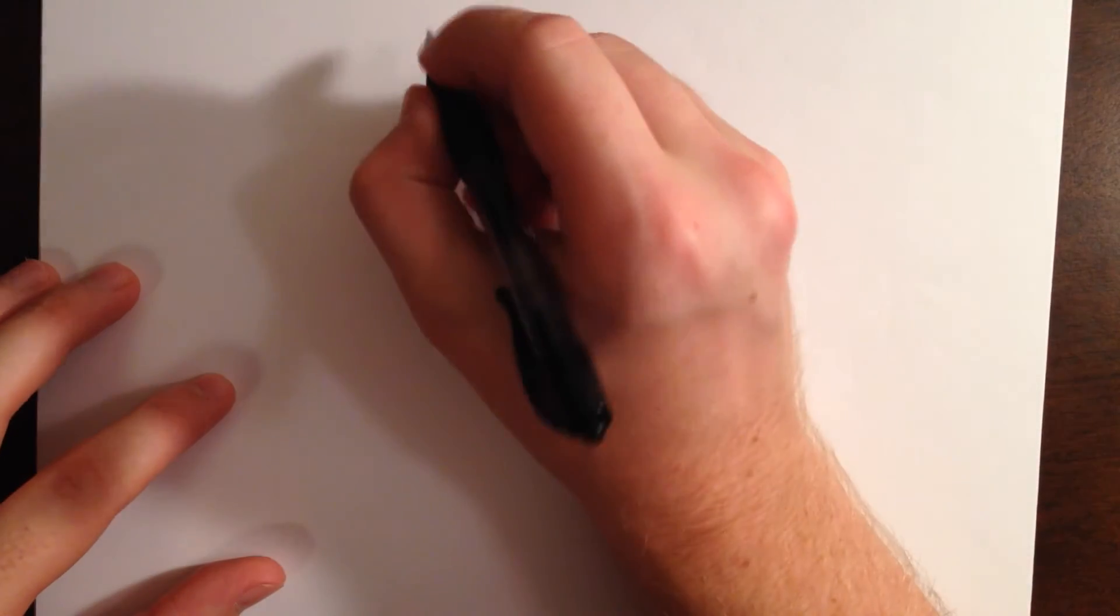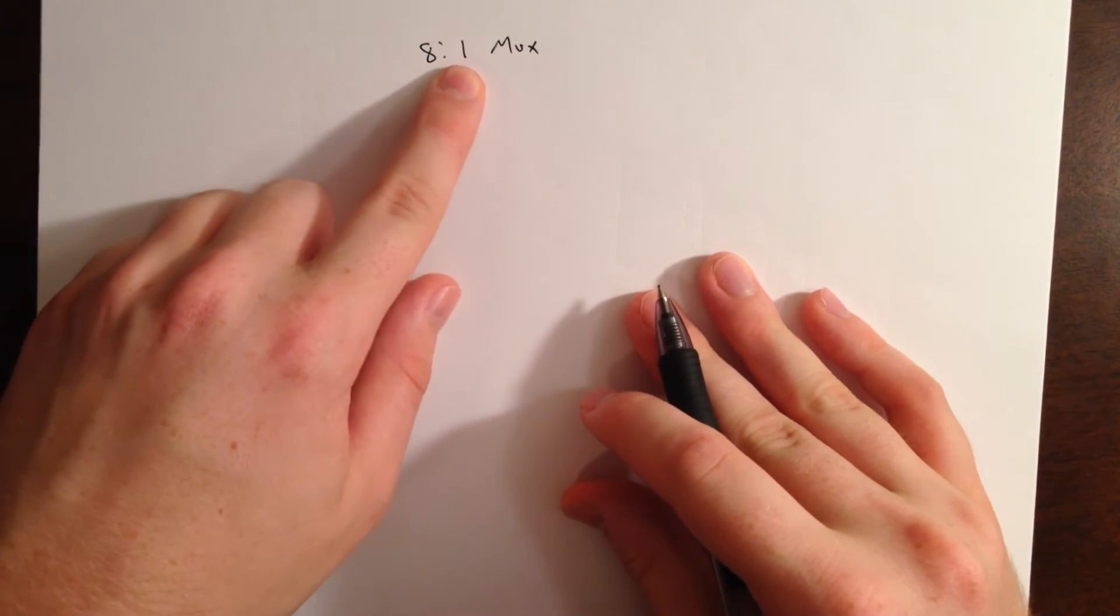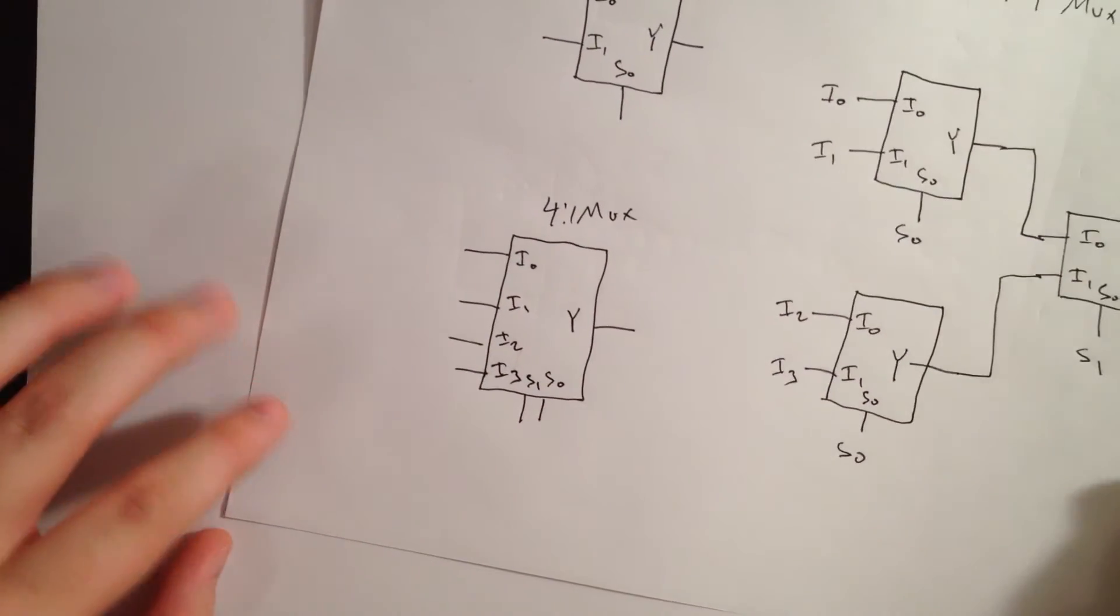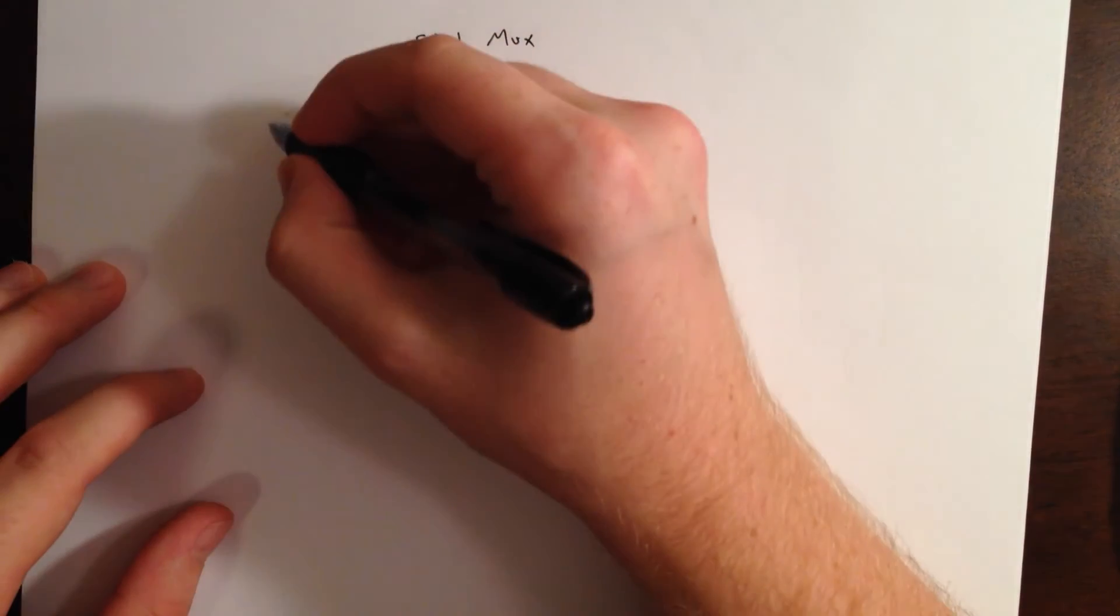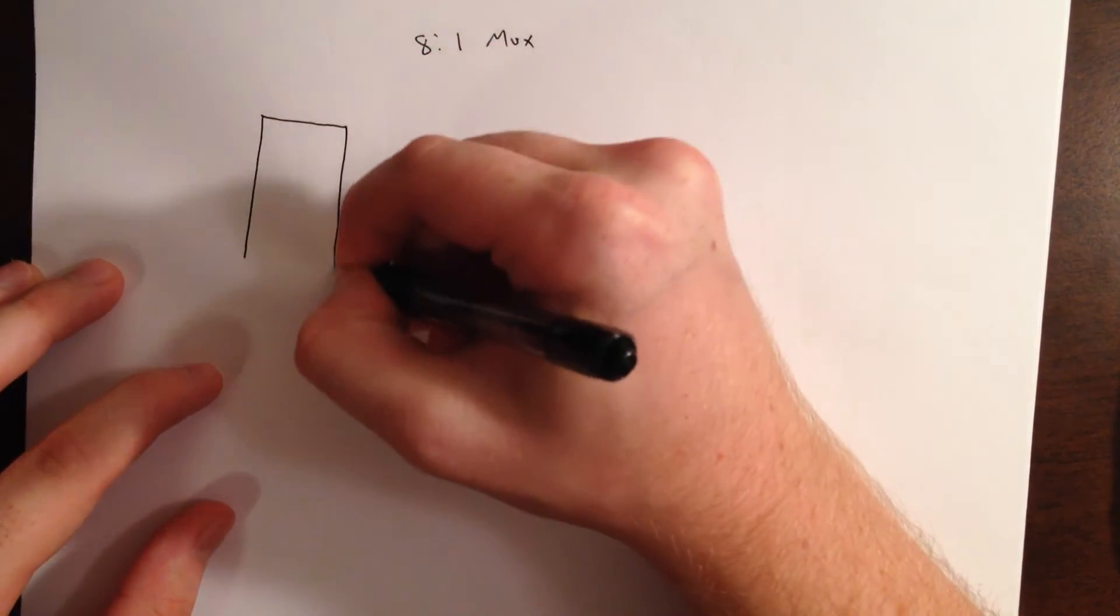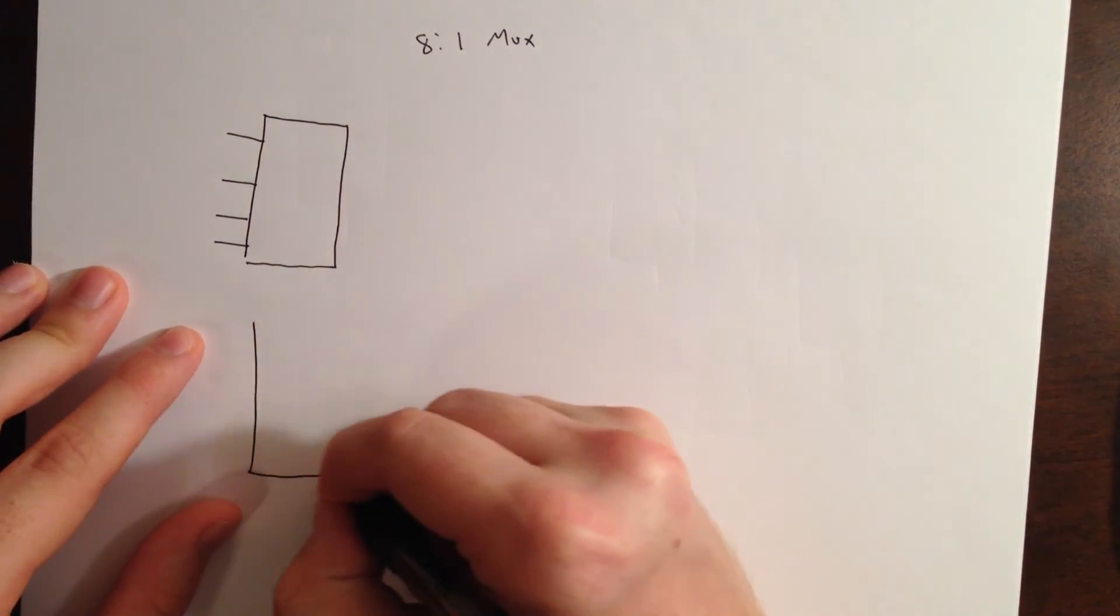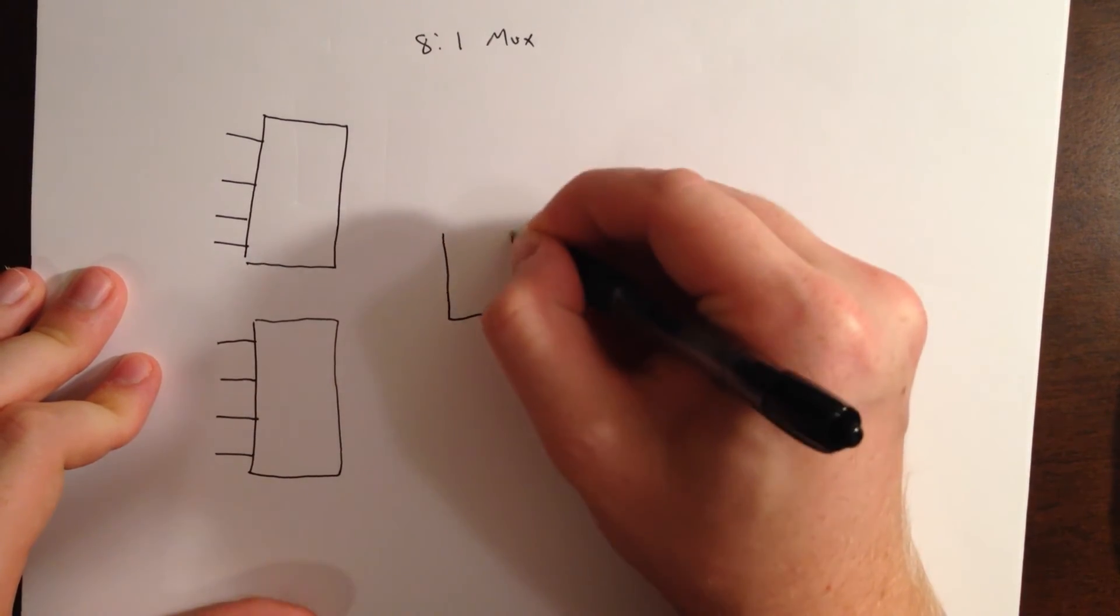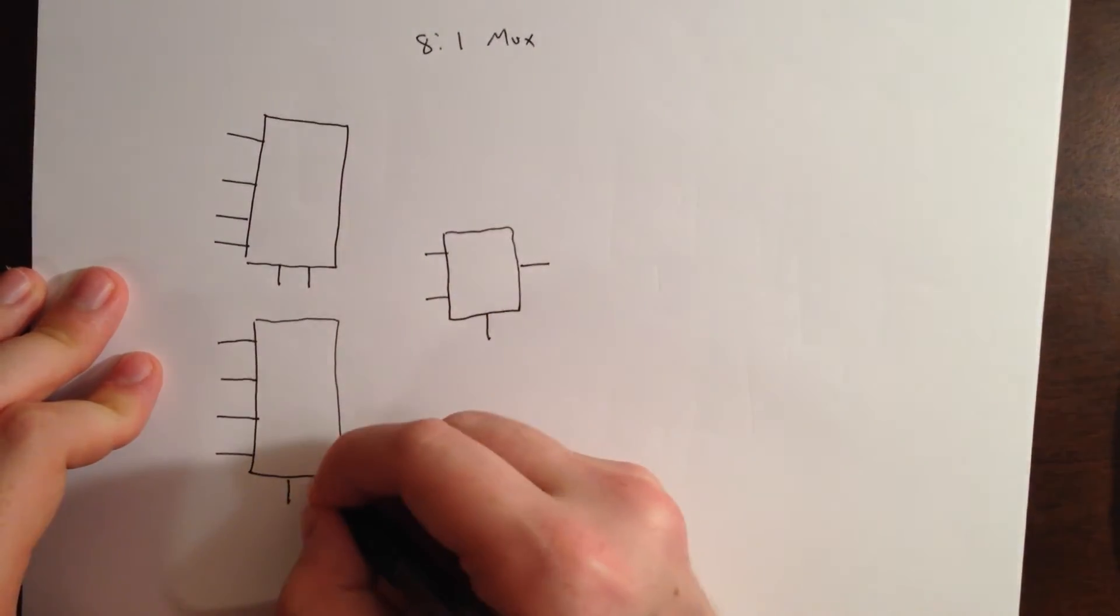So, let's use our 4:1 multiplexor to build an 8:1 multiplexor. We will have 8 inputs and 1 output. And, the quickest way to do this would be to use 2 of the 4:1 multiplexors, and that will give us 8 inputs and 2 outputs, and then connect those 2 outputs to the 2:1 multiplexor to get 1 output. So, let's draw our 2 4:1 multiplexors and then our 2:1 multiplexor.